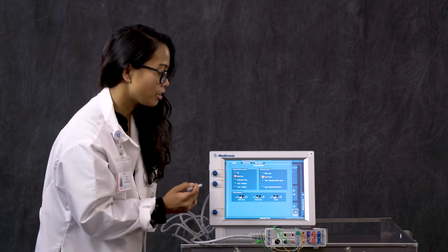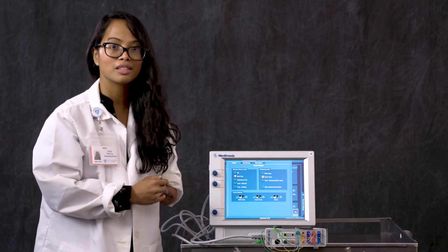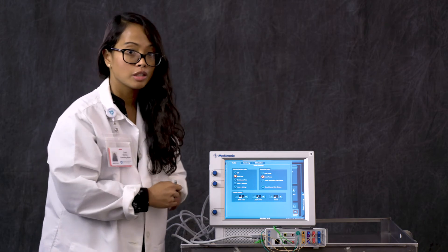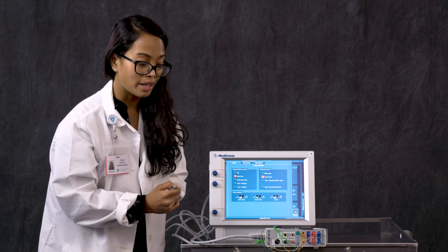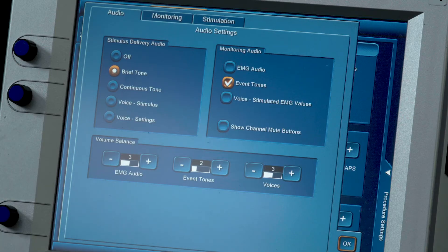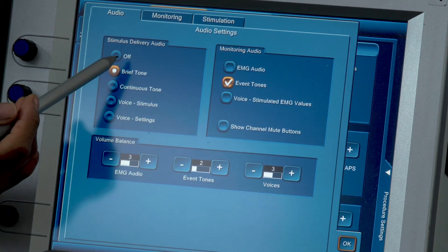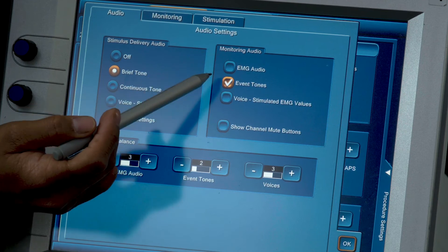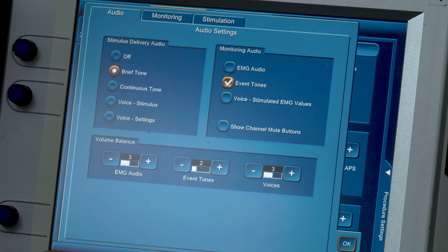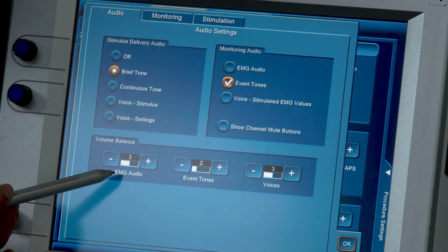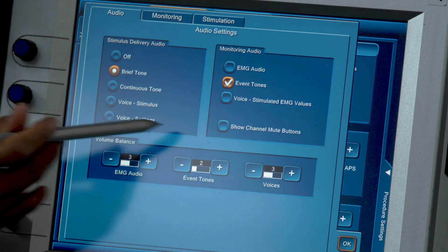So these are the tabs that we are setting up for the monitoring portion. We have three tabs: audio, monitoring, and stimulation. All of these are very important because we want the right information when we are monitoring in real time. Here are the settings that Inspire has suggested and recommended. For our audio tab, stimulation delivery audio is brief tone. The monitoring audio, only the event tones box is checked off. For the volume balance, for the EMG audio we have three, event tones two, and voices three.